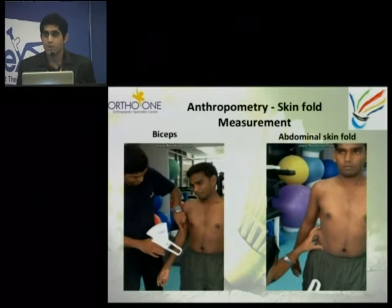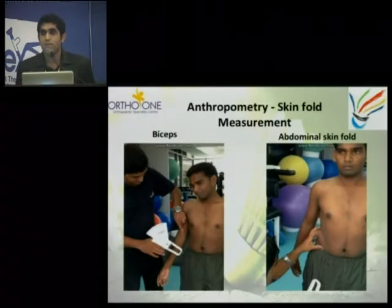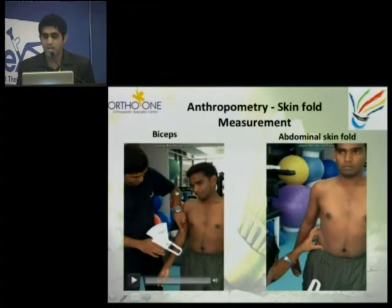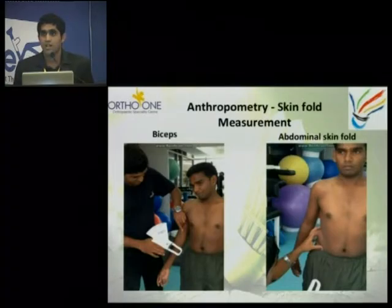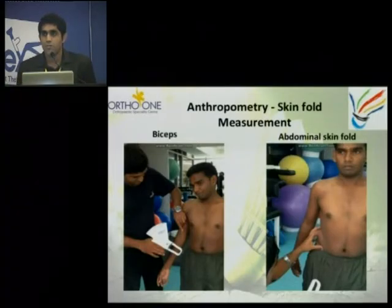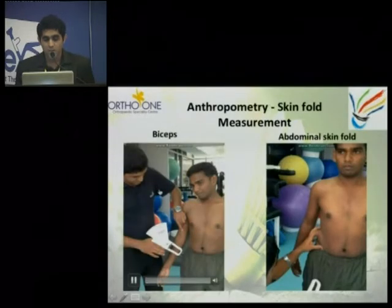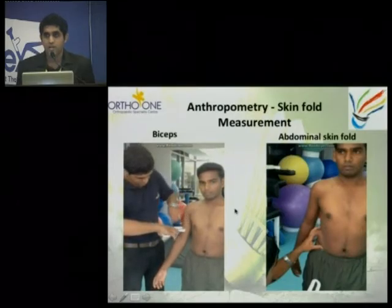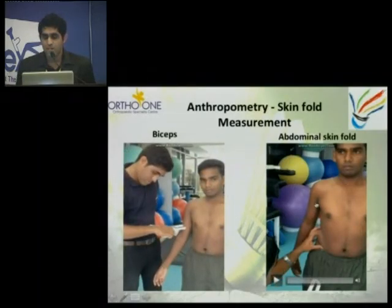First is anthropometry, which is divided into many stages. We are going to analyze your skin fold measurement. Skin fold measurement can be done for the biceps, triceps, abdominal, shoulder blade, thighs, chest area — everywhere — to find out your fat percentage. This is a simple test you can do anywhere; you grab a part of the skin and calculate it. This particular image shows the abdominal area measurement.